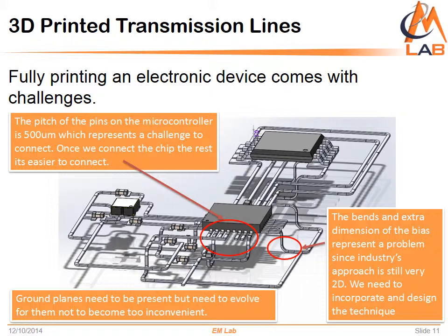Some of the challenges that we need to face are printing really small and still pushing the limit to get even smaller. The circuit I'm showing you has a 500 micron separation between the pins of its microcontroller, and right now it is a challenge just to print conductive lines that close and that small. On the other hand, the vias that span on all axes and go through materials with bends are very difficult to achieve using inks.